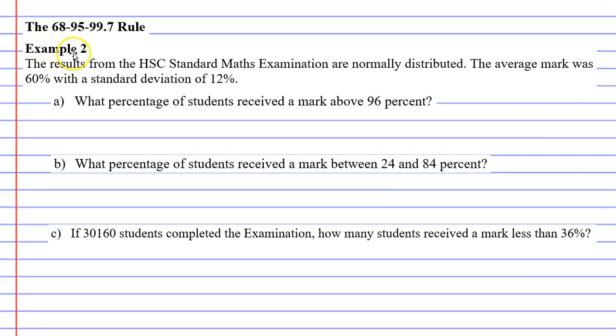In this video, we're going to complete example 2 using the 68-95-99.7 rule. It says that the results from the HSC standard maths examination are normally distributed, meaning it makes that bell curve shape.